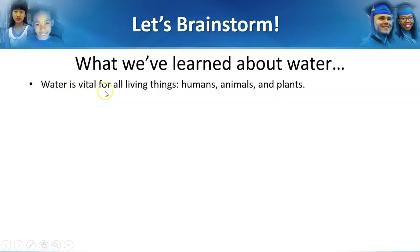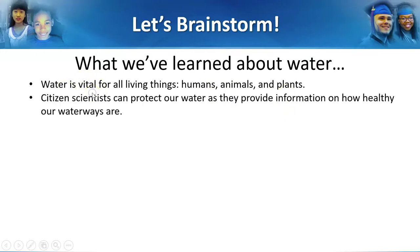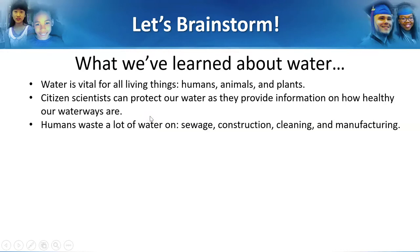So we know that water is vital for all living things — humans, animals, and plants. Without water, humans, animals, and plants would die. So it's vital; it is very, very important. We also know that citizen scientists can protect our water as they provide information on how healthy our waterways are. In one of our lessons, we looked at what citizen scientists can do — how they can take samples of water and analyze it to make sure that it is clean. We also know that humans waste a lot of water on sewage, construction, cleaning, and manufacturing.